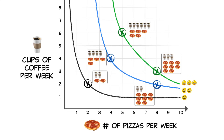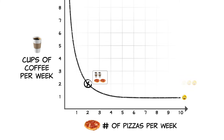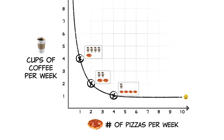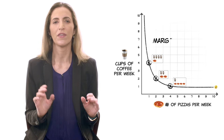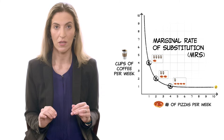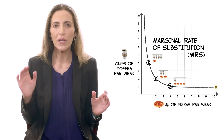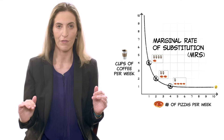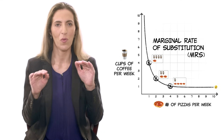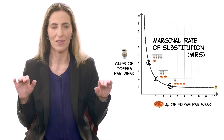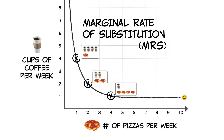Notice your indifference curve isn't a straight line — that's because its slope changes as you move between different combinations of goods. The slope of the indifference curve is called the marginal rate of substitution, and it measures the rate at which you are willing to forgo cups of coffee in order to get one more pizza while keeping your utility constant. The easiest non-calculus way to find it at a given point is to draw a straight line tangent to the curve at that point.